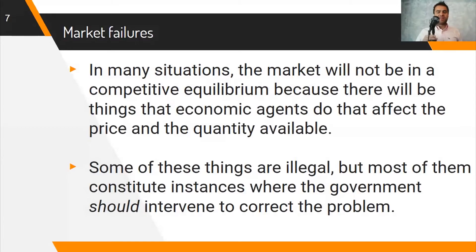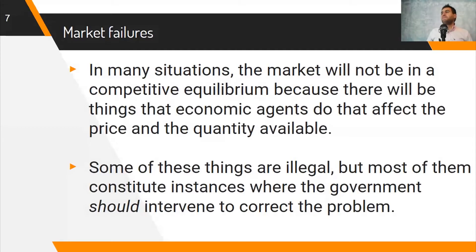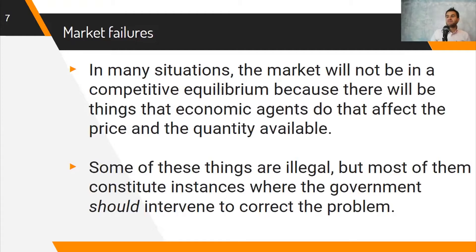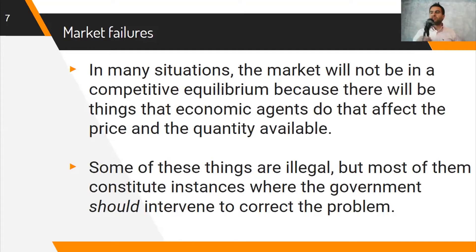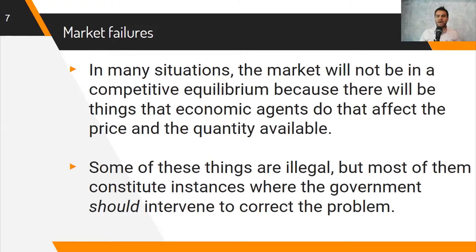Market failures may be different situations that address the idea that economic agents do affect the price and the quantity available. One case may be monopolies and market power from specific big firms in certain industries. Others may be things like asymmetric information, which means that certain people — because they have more income, more resources, or more education — can make better decisions than people who don't have good information. That is an unfair advantage that allows them to become more successful in their economic transactions. All of those are market failures that could be addressed by different policy interventions. Some of these things are illegal, some are legal, and a lot depends on the type of country, the laws you have, and the specific situation.